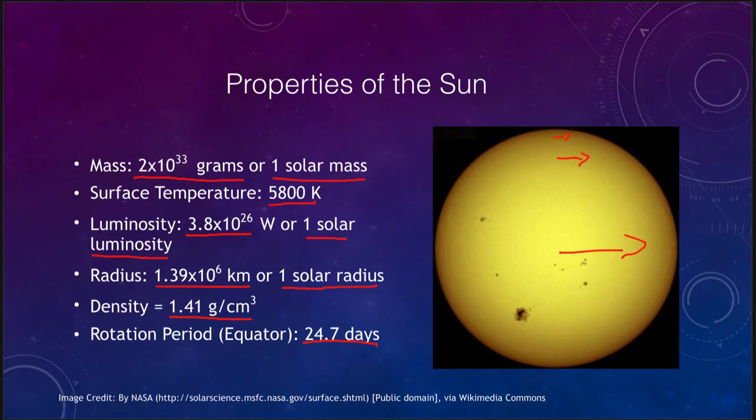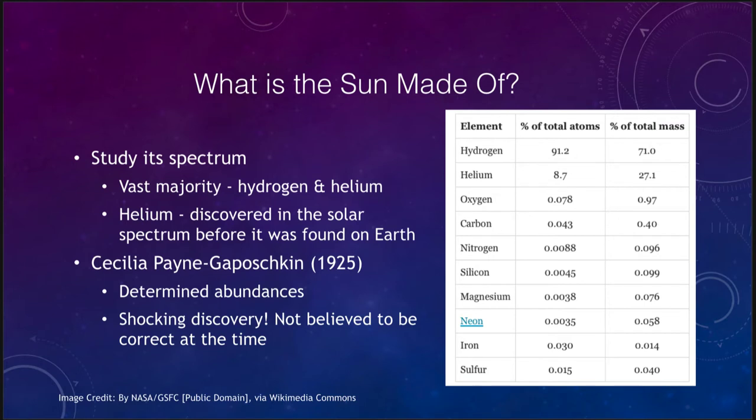So unlike the Earth where every part rotates the same speed, when you look at the Sun the equator will rotate faster and the other parts you get further away from the equator will rotate slower and slower. So what is the Sun made up of? Let's take a look here and we find that we can determine what the Sun is made up of by studying its spectrum.